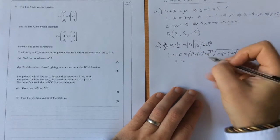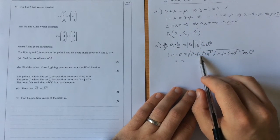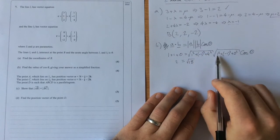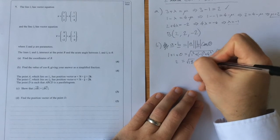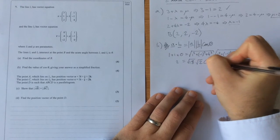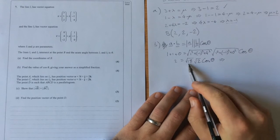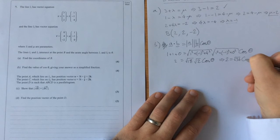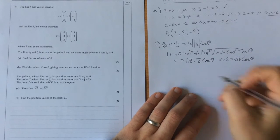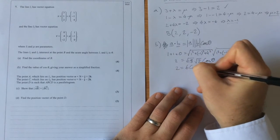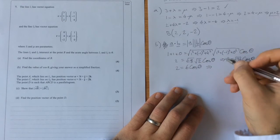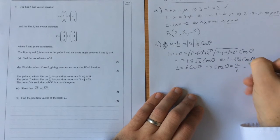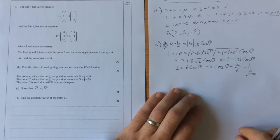So 2 is equal to, this is 1 plus 1 is 2, plus 16 is root 18. Here we're going to get 1 plus 1 plus 1, so this is root 2 cos theta. So root 18 times root 2 is root 36, so 2 is equal to 6 cos theta, which gives us cos theta, that is 2 over 6, or 1 third. So there's our value for cos theta.